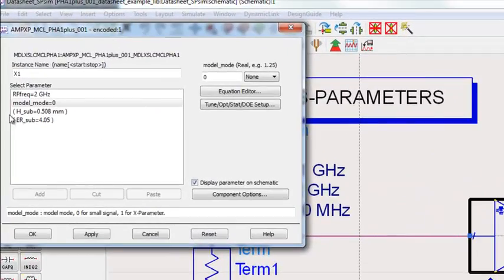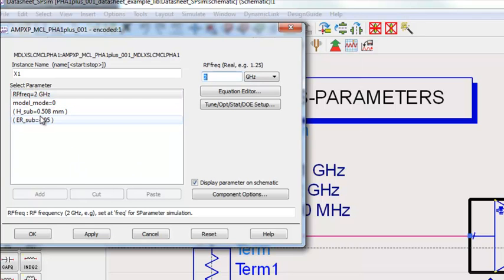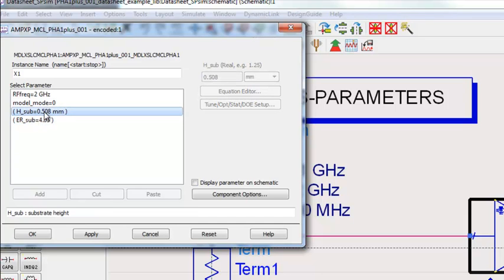And typical measured results or model simulated results are also included in this data sheet. Other input parameters include the RF frequency, which in harmonic balance simulations can be tied to that fundamental frequency setup. Some of our models are substrate scalable. This particular one, we're just showing the substrate thickness and epsilon r that was used to develop the model.